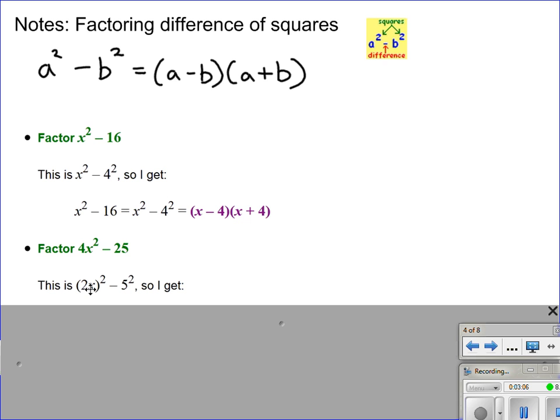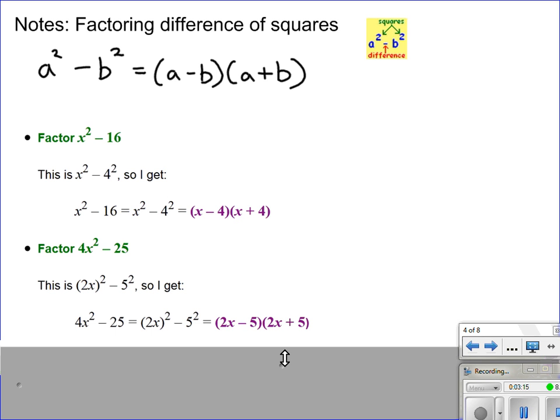So 2x is going to be my a, I'm going to put that right there and right there. And 5 is going to be my b, and I'll put that right there and right there. And I go ahead and do that, and I get my final answer there, 2x minus 5 and 2x plus 5.